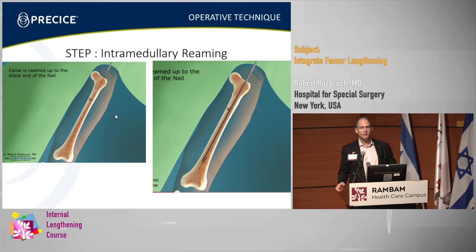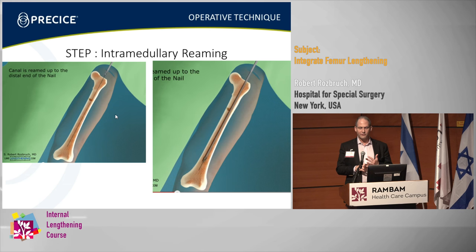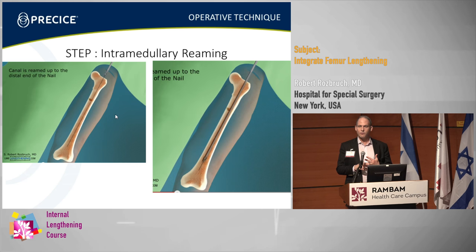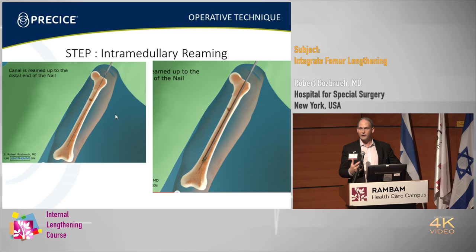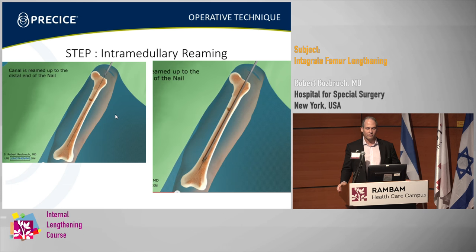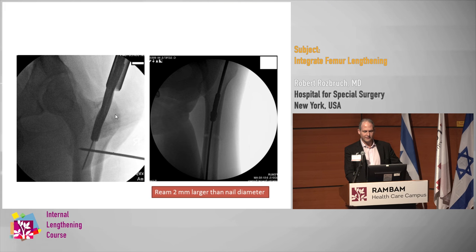Then you start your reaming. The drill holes serve two purposes: number one, it's the first step of the osteotomy; number two, it's the vent hole. Because you are reaming an intact bone which can have the complication of fat embolism syndrome. The reamings exude through those holes. Using this technique, I have not had a case of fat embolism in a good number of cases.